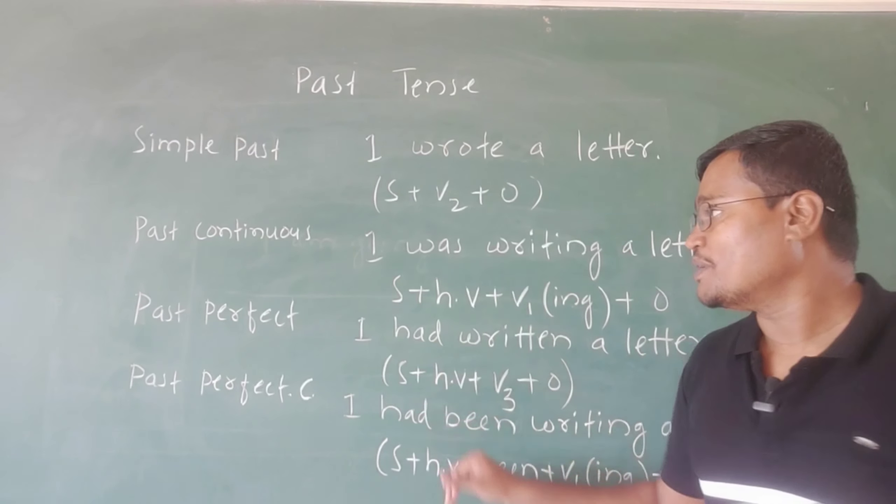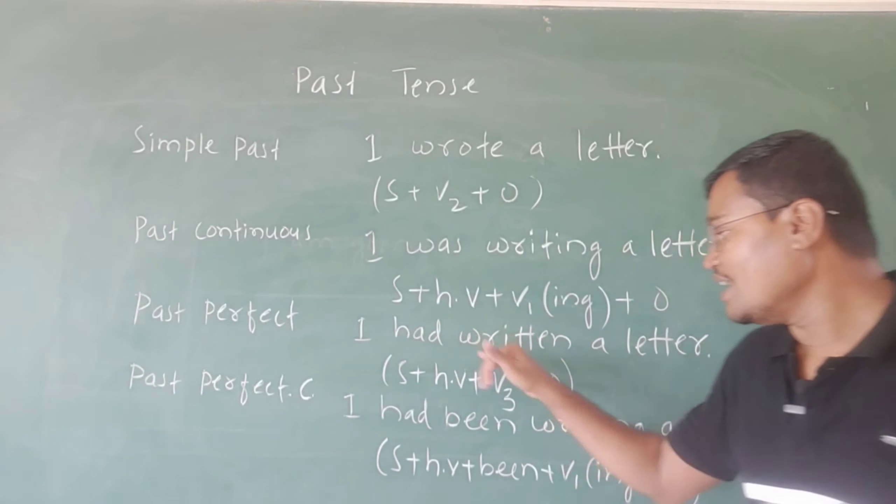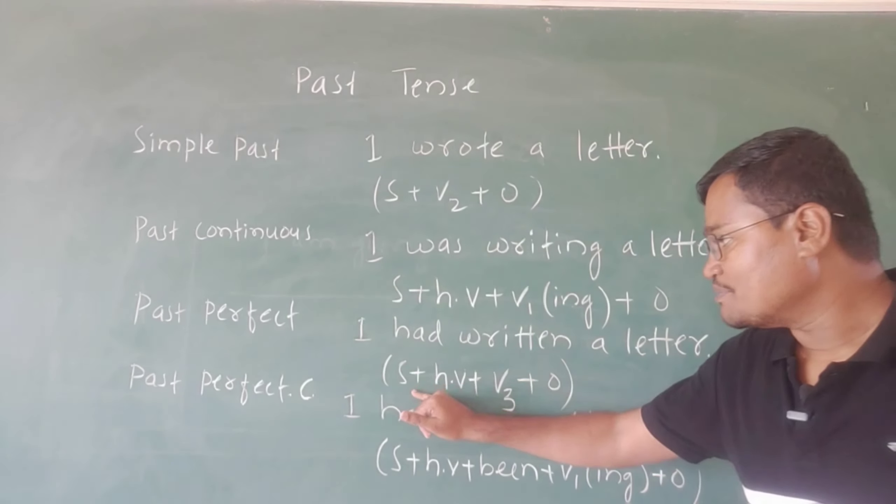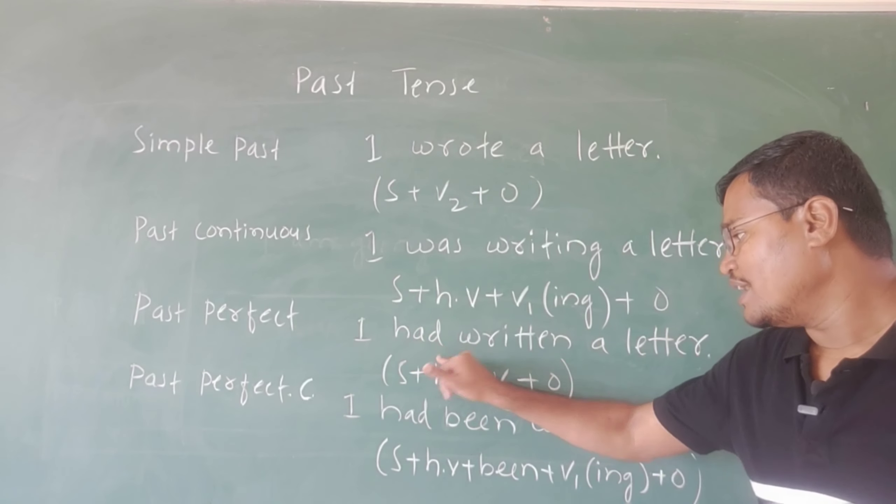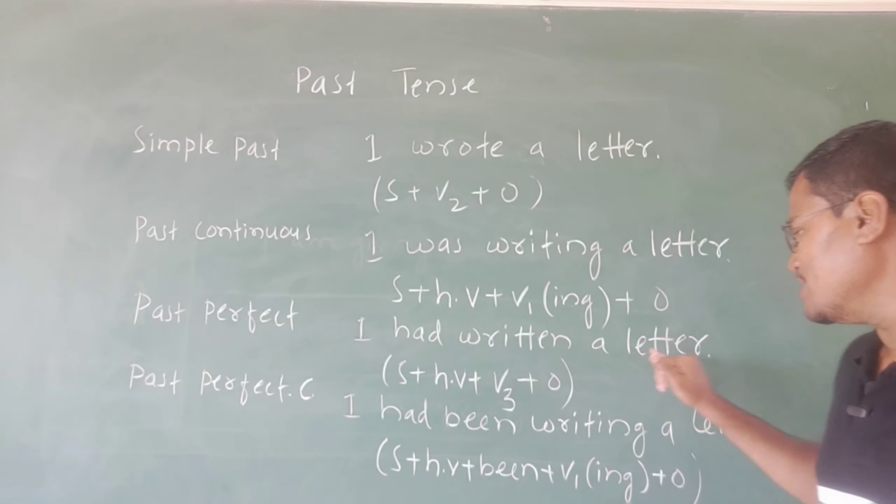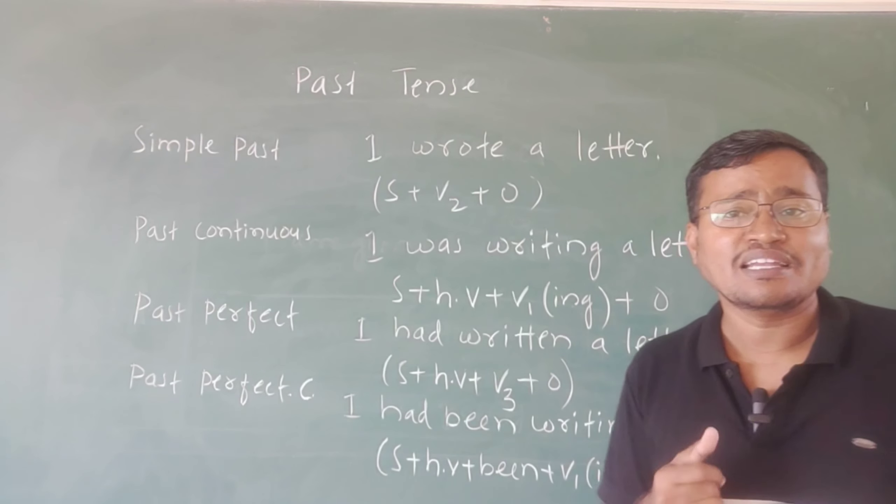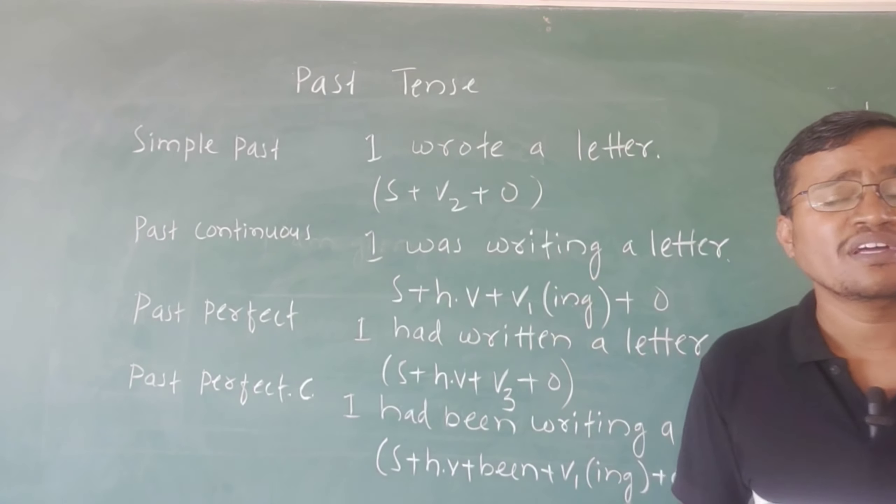Now, past perfect: 'I had written a letter'. The formula is subject plus helping verb plus V3 plus object. Write, wrote, written - you have one, two, three forms. This is past perfect.